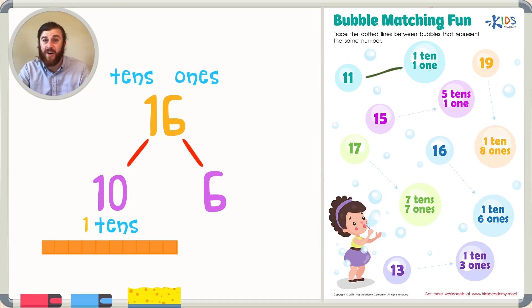So let's check our answer choice. I see the answer choice is 1 ten, and that's good because we have 1 ten, and 6 ones, and that's good because there are 6 ones. This is correct, so let's trace on the dotted line.